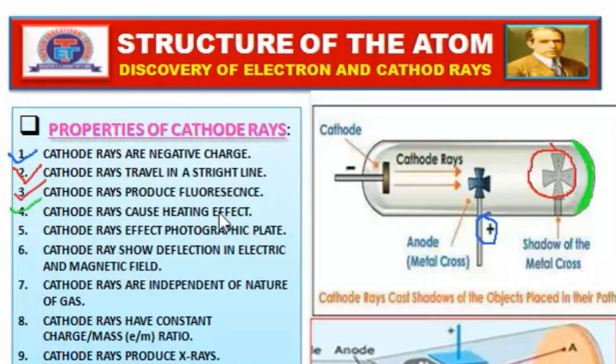Number four: cathode rays cause heating effect. Cathode rays have mechanical energy. When they strike a surface, they cause heating effect because the kinetic energy of cathode rays is transferred to the object, which results in increased temperature.